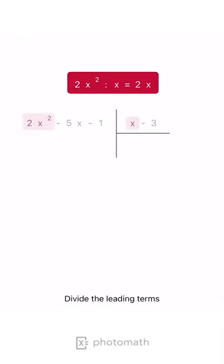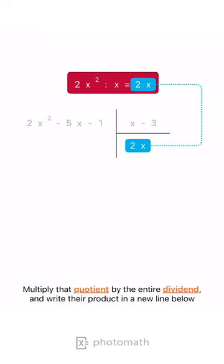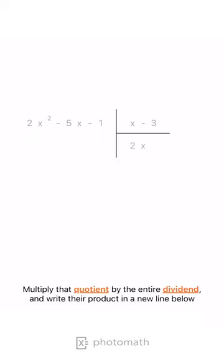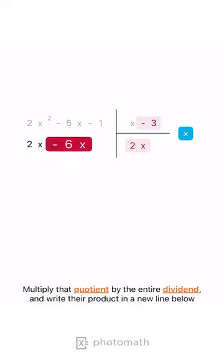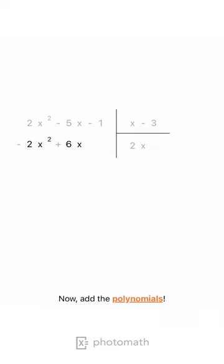Divide the leading terms, write the result in the answer line, multiply that quotient by the entire divisor and write their product in a new line below. Change the sign of each term, then add the polynomials.